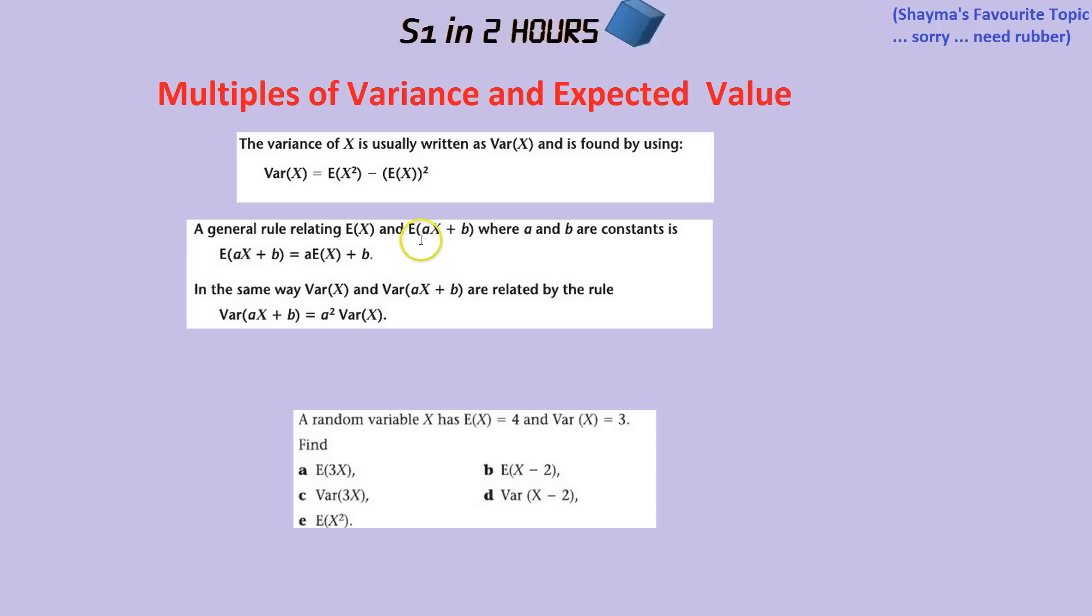The general rule is if you have a multiple of the X, that means you simply multiply the expected value by that amount. That makes sense because if you times all the values by say 3, you'd expect the overall answer to go up by times by 3, scale factor 3. Same thing if you add a certain number to each of the values, you'd expect the expected value to go up by that number.